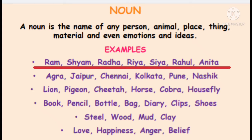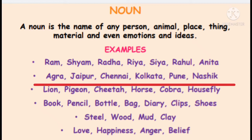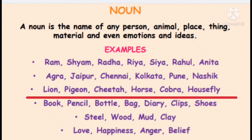Ram, Shyam, Radha, Sia, Ria, Rahul, Anita — these are nouns that are names of persons. Agra, Jaipur, Chennai, Kolkata, Pune, Nashik — these are names of places. Lion, Pigeon, Cheetah, Horse, Cobra, Housefly — these are names of animals.